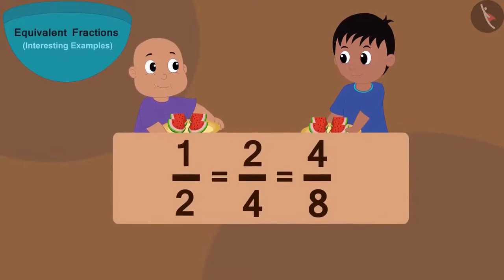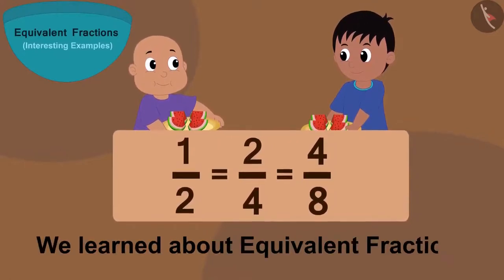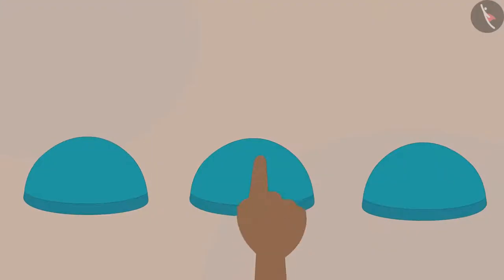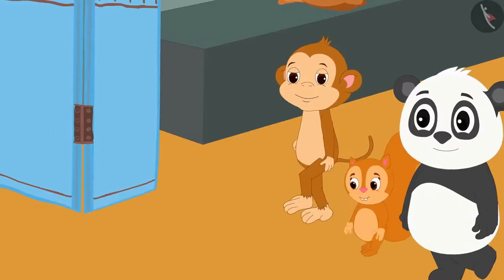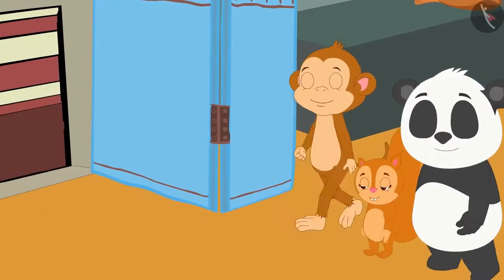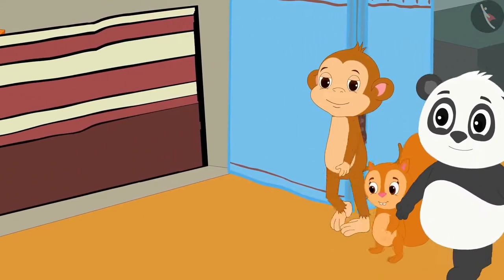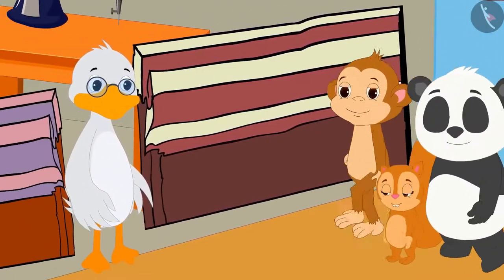In the previous video, we learned about equivalent fractions. In this video, we will see some interesting examples of this. Today, Babban, Golu and Chanda have come to buy clothes from Barbole Uncle's shop.